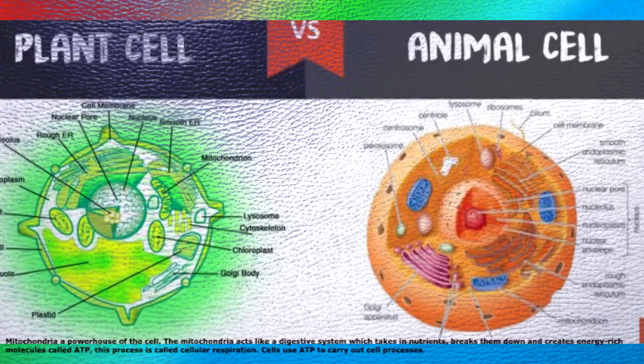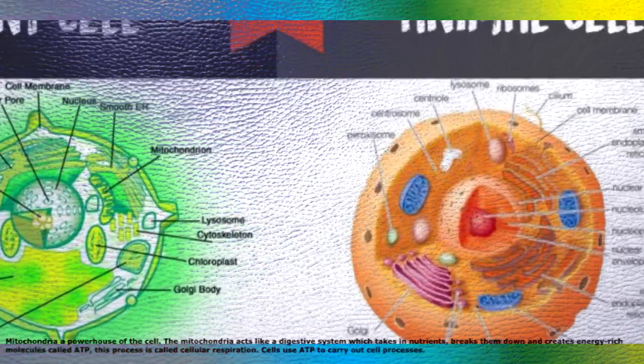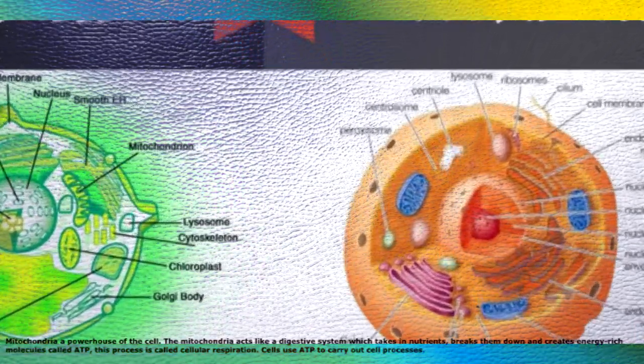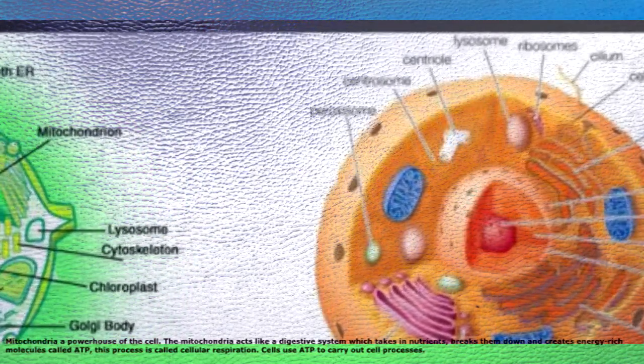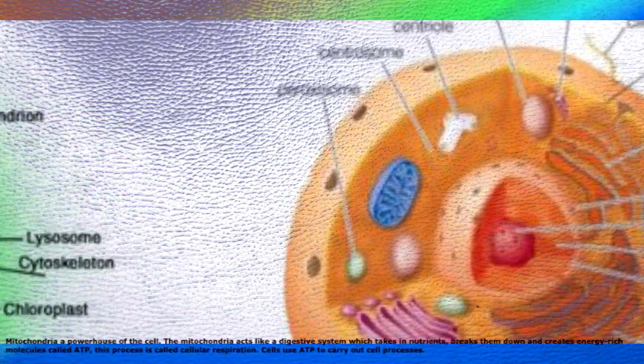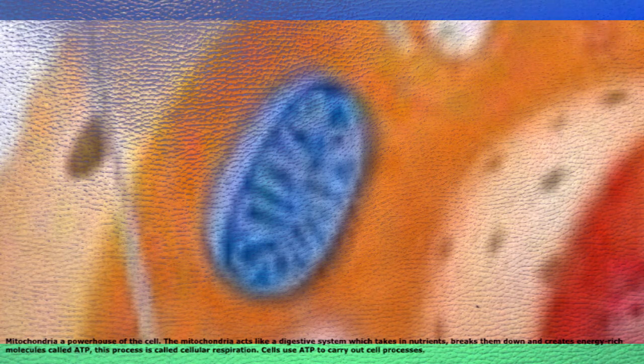Mitochondria — the powerhouse of the cell. The mitochondria acts like a digestive system which takes in nutrients, breaks them down, and creates energy-rich molecules called ATP. This process is called cellular respiration. Cells use ATP to carry out cell processes.